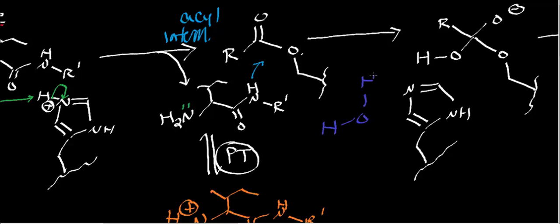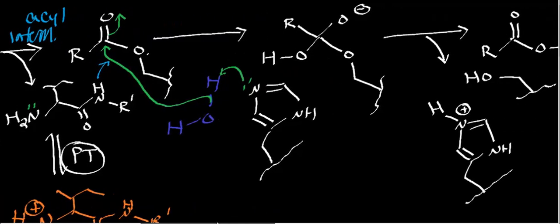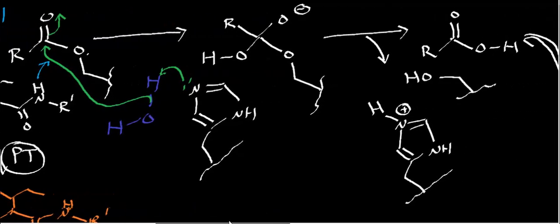At this point, water is allowed into the active site. The newly regenerated histidine residue performs a proton transfer, deprotonating water. The resulting hydroxide electrons attack the electrophilic carbonyl carbon of the acyl intermediate, generating a second tetrahedral intermediate.